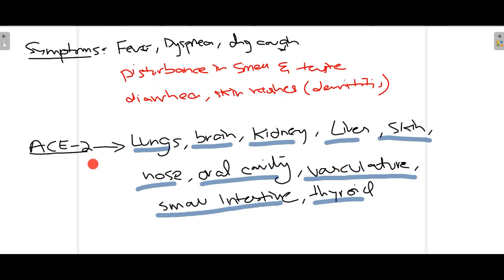Since ACE2 receptors are the main mechanism by which coronavirus affects humans, these receptors are present in different organs. Mostly they are present in the lungs, which is why the lungs are severely affected. These receptors are also present in the brain, kidney, liver, skin, blood vessels, oral cavity, nasal cavity — causing disturbed smell sensation — small intestine, causing diarrhea, and the thyroid as well.